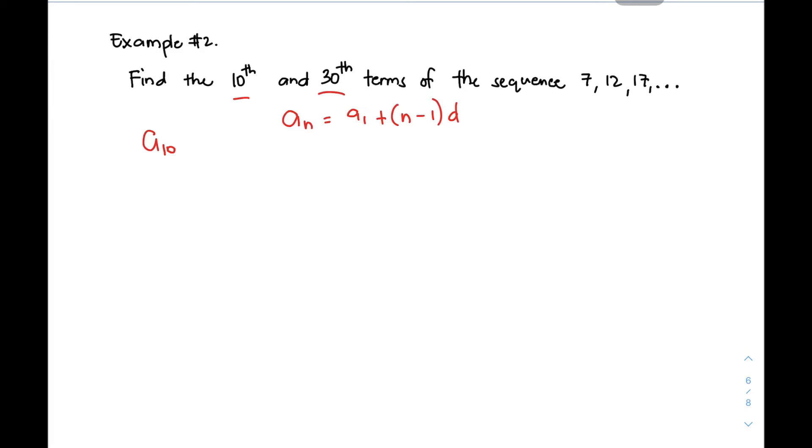Your a₁, pareha naman yan. So, you have here a₁ = 7. Your n is 10 kasi pang-10th term yung hinahanap mo. And then, yung common difference natin, hanapin muna natin. You have here 12 - 7 will give you 5, and then 17 - 12 that will give you 5. So, yung common difference natin is 5.